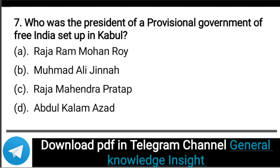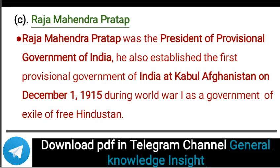Next question: Who was the President of the Provisional Government of Free India set up in Kabul? The correct answer is option C, that is Raja Mahendra Pratap. Raja Mahendra Pratap was the President of the Provisional Government of India. He also established the first Provisional Government of India at Kabul, Afghanistan on December 1, 1915, during World War I, as a government in exile of Free Hindustan.